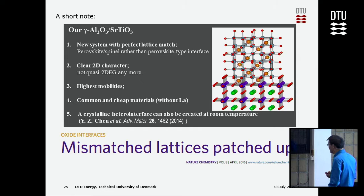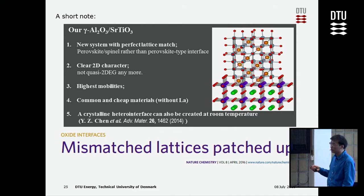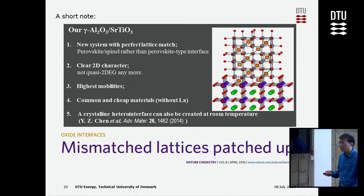This material has a lot of advantages: better lattice match, cleaner 2D confinement, and high mobility. Importantly, it's cheap — aluminum is a common material you can find everywhere. We also found it can be grown at room temperature. Recently there has also been discussion that highly lattice-mismatched superlattices may give a lot of new opportunities to oxide interfaces.